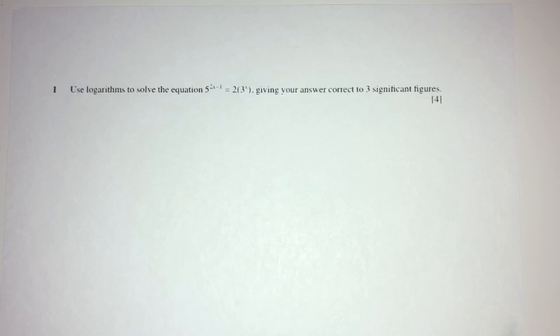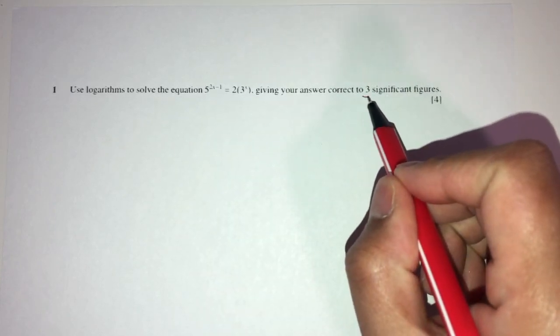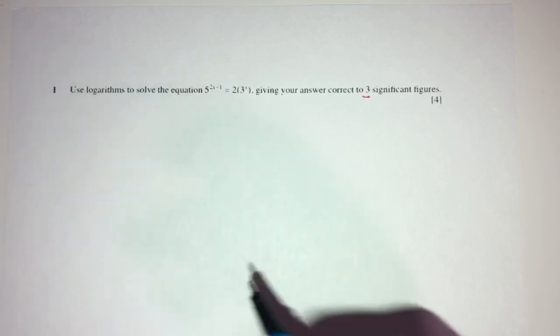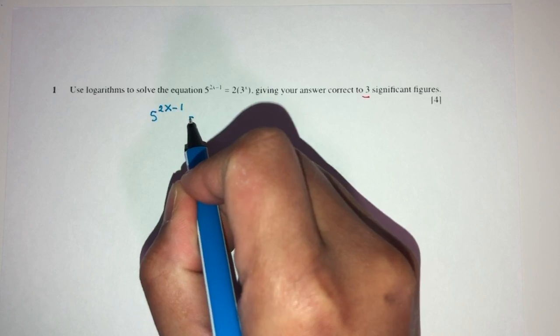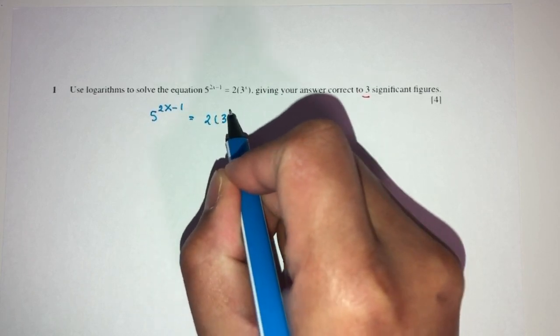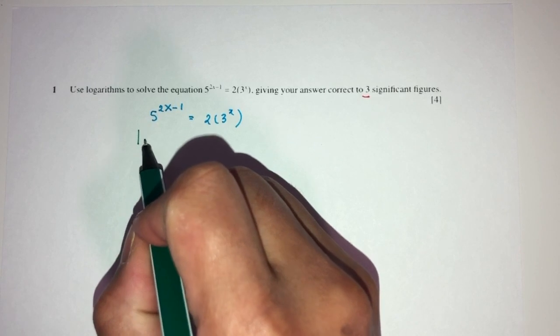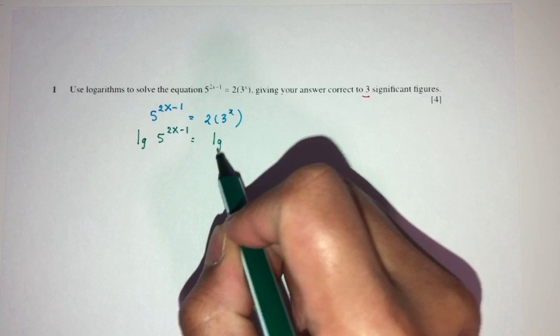Question number one. Here, we have to use logs to solve this equation, giving your answer correct to 3 significant figures. Solving means find the unknown. Here, we have to find the values of x. Let me write down this equation again. Here we have 5^(2x-1) = 2 × 3^x. The good thing is we know already we have to use log by the question. So, we apply log on both sides.